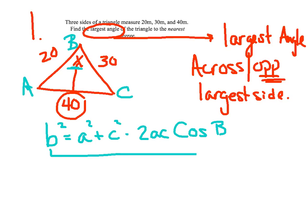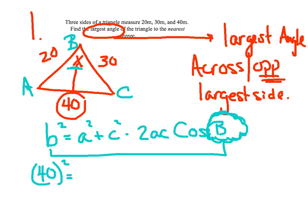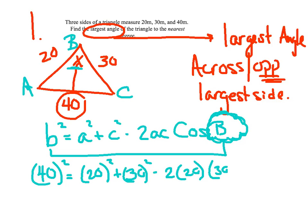I just want to remind you that first and last letter have to match up. This math is going to be a little uglier today — plugging in the formula is fine, but it's the math behind it. We are finding angle B. So when I plug these in — watch the parentheses — 40 squared equals 20 squared plus 30 squared minus 2 times 20 times 30 times the cosine of B.